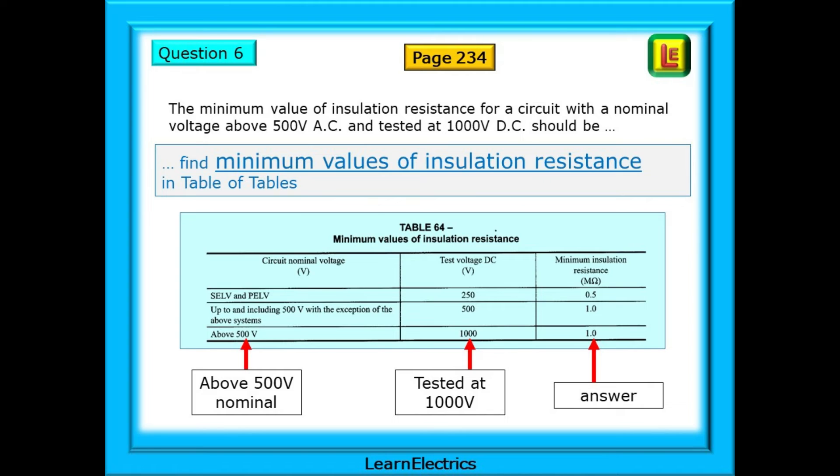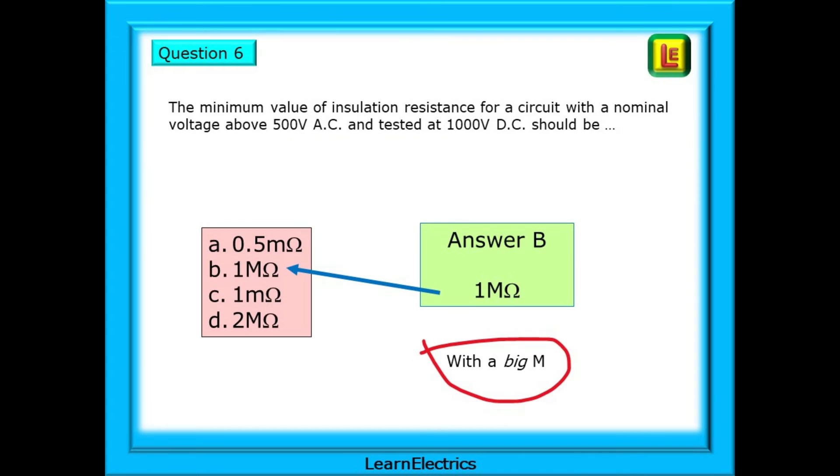We should know that this question is to do with testing, and that testing is part 6 of the Brown Book. Looking through table of tables, there is only one entry for part 6, and this is table 64, minimum values of insulation resistance. Just what we're looking for. Go to page 234. Again, break the question down into discrete pieces of information. Above 500 volts, find that row, and test it at 1000 volts. The last column gives us the answer, 1 megaohm of resistance. Now choose an answer, and we should go for answer B, 1 megaohm.